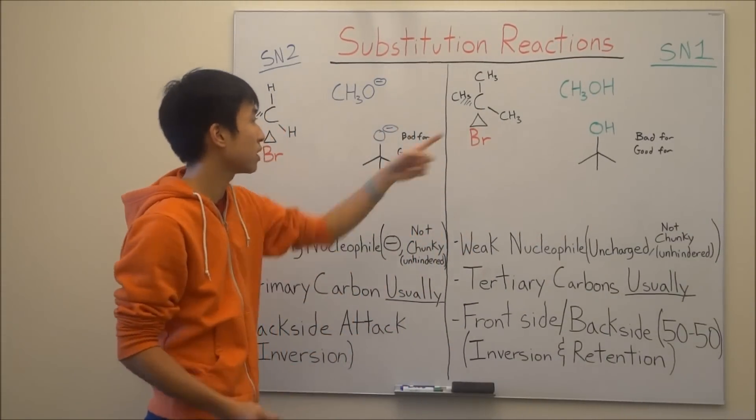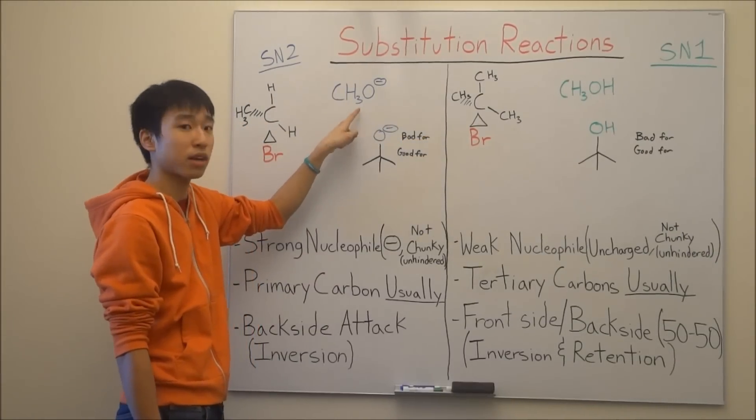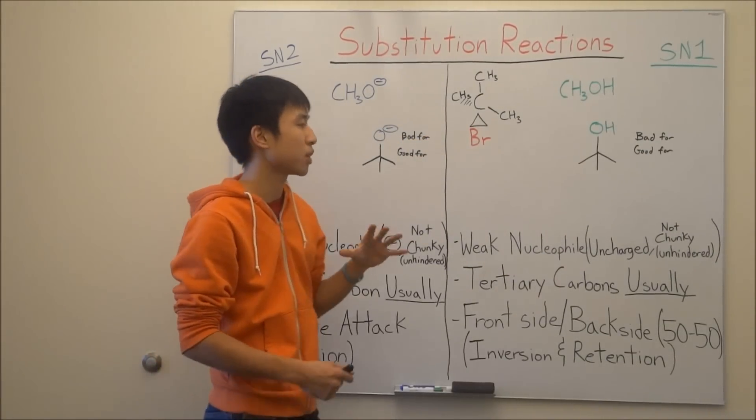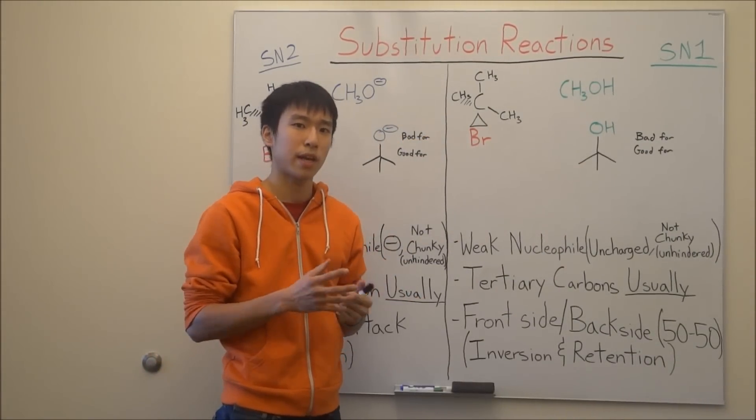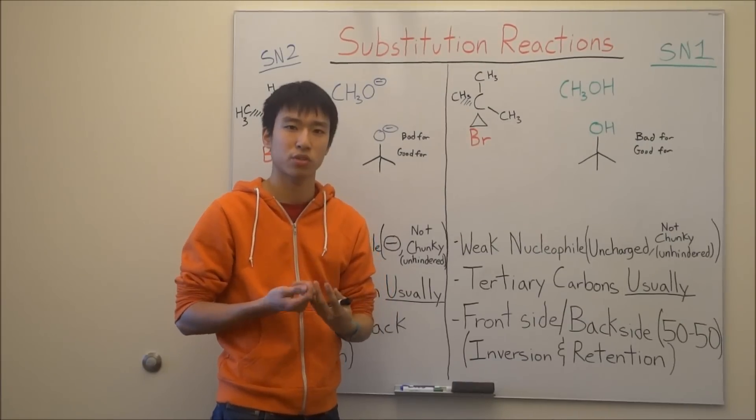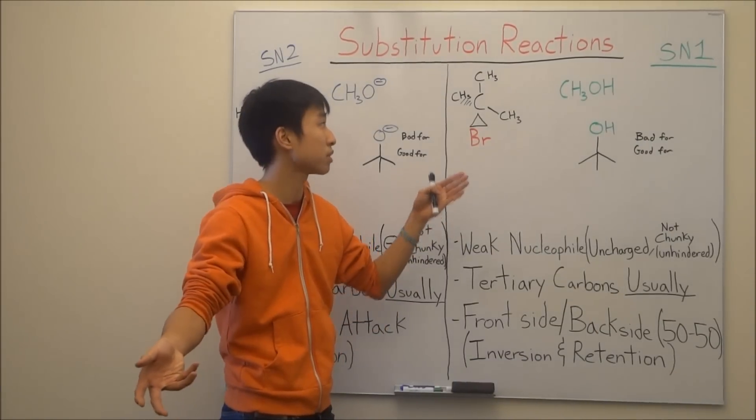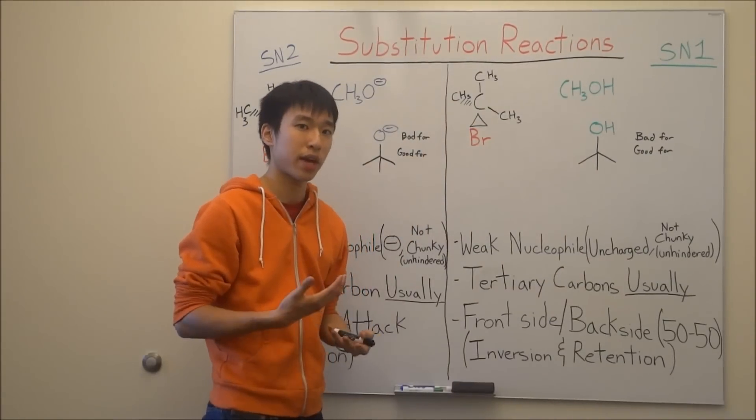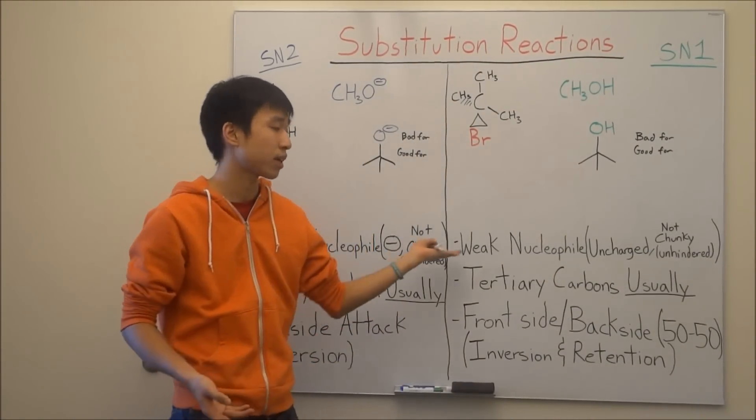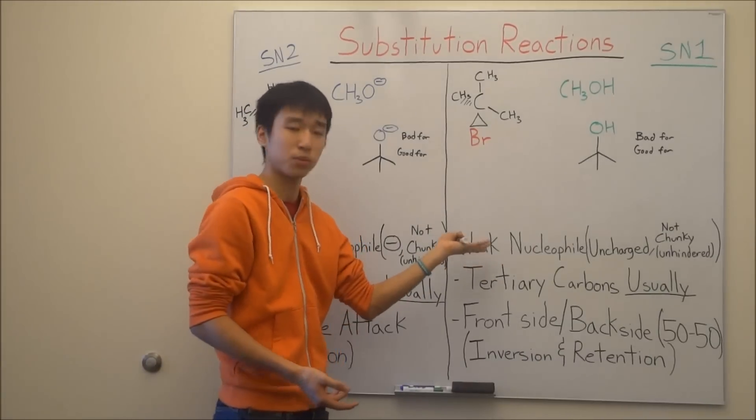But as you can see, this methanol, it doesn't have a negative charge like methoxide, so it makes it much more of a stable molecule, and it doesn't have extra electrons to donate to other molecules like this one. And so it's not willing to attack, and if it's not willing to attack, it's not going to be a strong nucleophile, hence weak nucleophile.